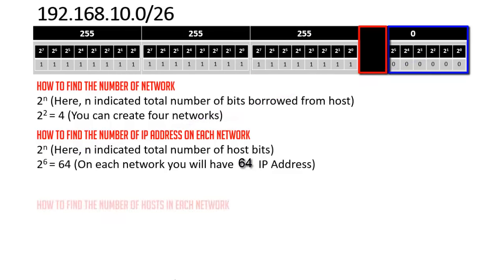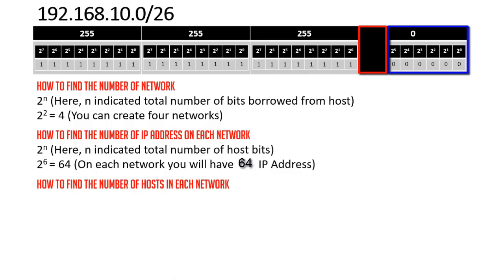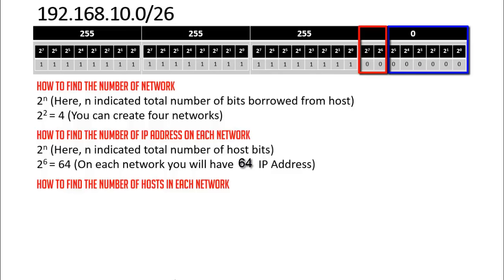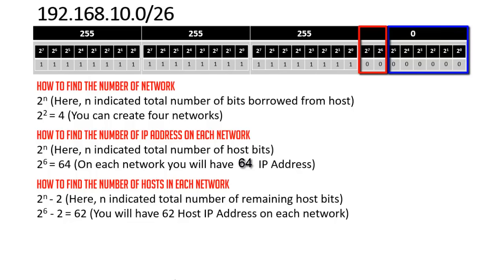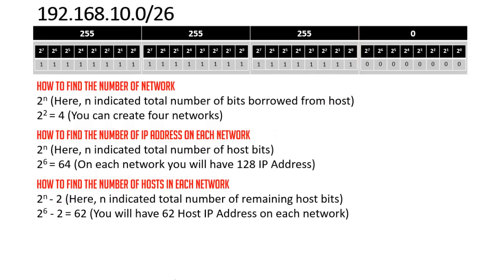To find the number of hosts on each network, the formula is 2^n − 2, where n is the remaining host bits. With 6 bits remaining, 2^6 − 2 = 62. You can assign 62 host IP addresses on each network.